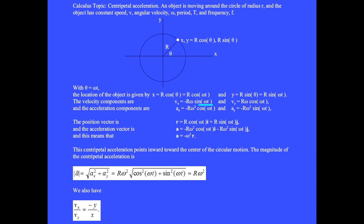And we have a sub y equals minus r omega squared sine omega t.